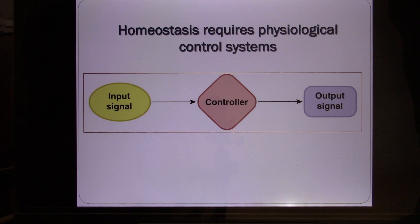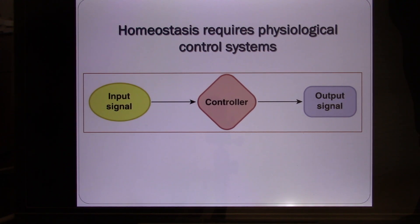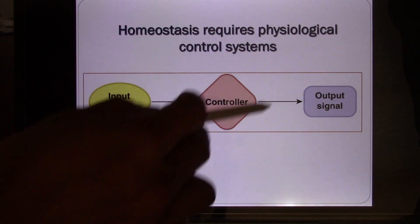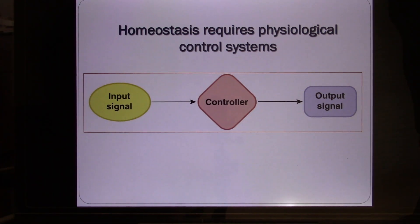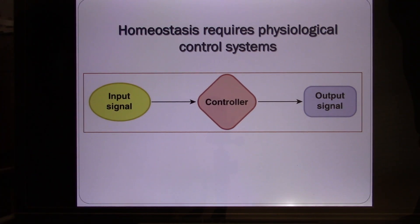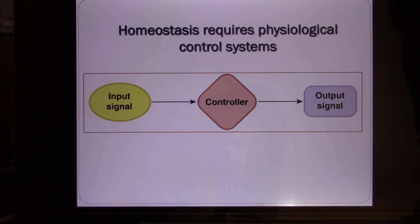Let's look at the circuitry to create homeostasis. You have a control center, and you need to have an input signal. If you want to control blood pressure, for example, you need a control center.